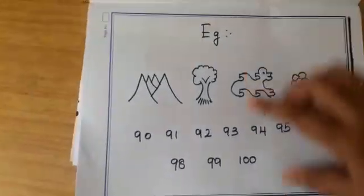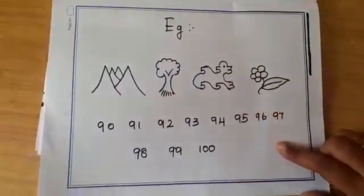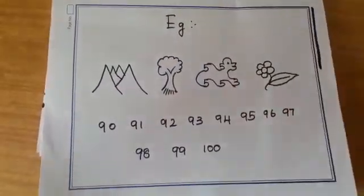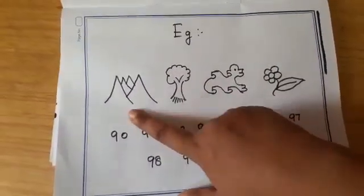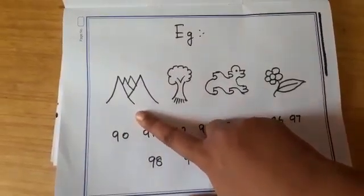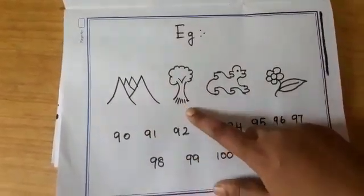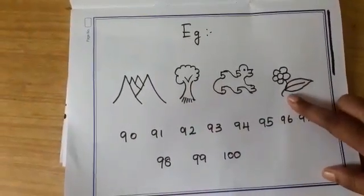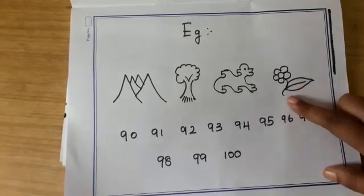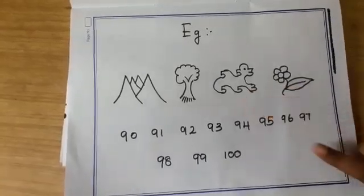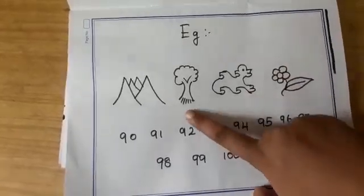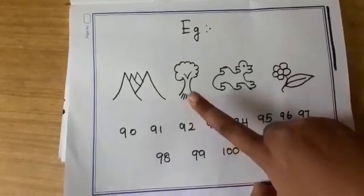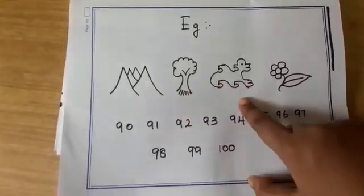So I am taking some more examples. I have drawn here some pictures. So you should answer for this. So first what is here? Mountain. What will be the successor of mountain? Yes, it is tree. What will be the predecessor of flower? Yes, predecessor of flower is dog. What will be the successor of tree? Successor of tree is dog. Yes, correct.